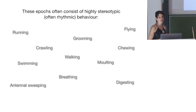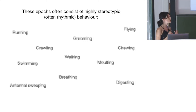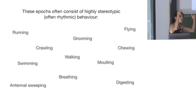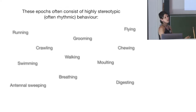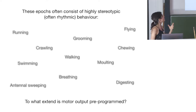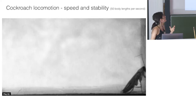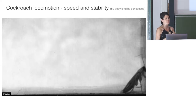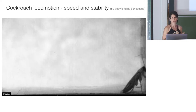One of the questions that interested me when I started working on motor control for my postdoc at Princeton was to what extent these are pre-programmed — how much is already set before the behavior is actually executed. That led me to join a group studying how cockroaches, one of the fastest animals on earth, run.